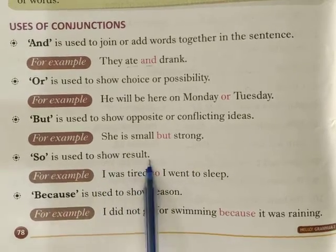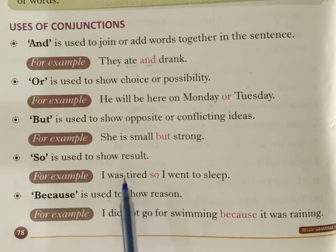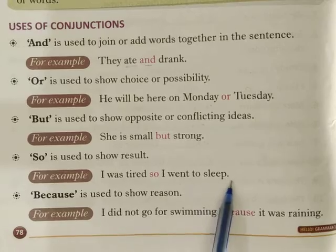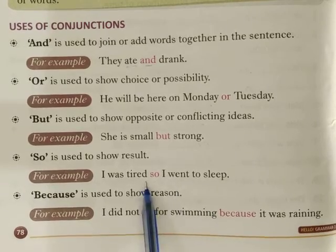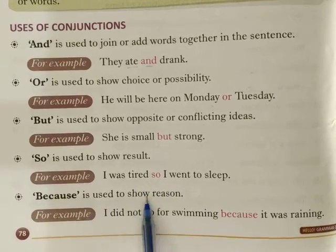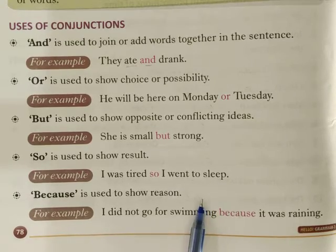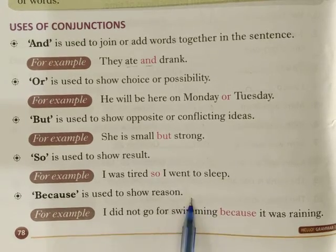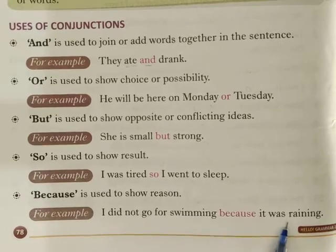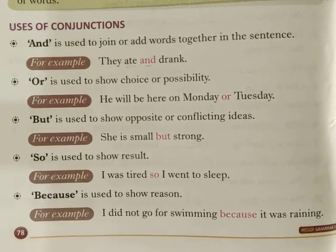'So' is used to show result. For example: I was tired so I went to sleep. 'Because' is used to show reason. For example: I did not go for swimming because it was raining.